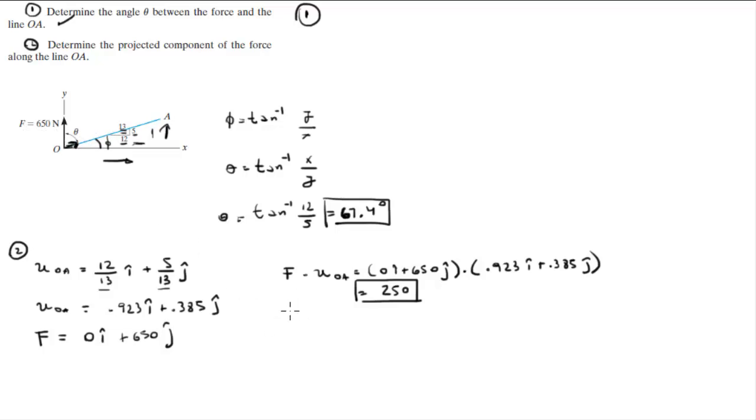If you wanted to find the Cartesian vector form of the vector going along OA, all you have to do is multiply this 250 times the unit vector OA.